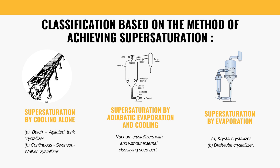Supersaturation by cooling alone thus includes the batch agitated crystallizer and the Swenson Walker crystallizer — one batch, one continuous. The second type is supersaturation by adiabatic evaporation and cooling: think of making crystals by letting some of the liquid turn into vapor. This group includes vacuum crystallizers and some with an external classifying seed bed, working like smart crystal-growing chambers. The third type is supersaturation by evaporation. This can be achieved by the crystal crystallizer, which works well for substances that don't vary much in solubility with temperature, and the draft tube crystallizer, which also uses evaporation but with an additional design feature.